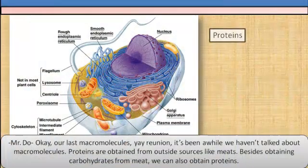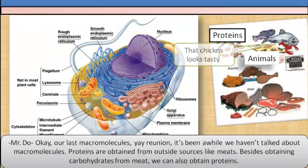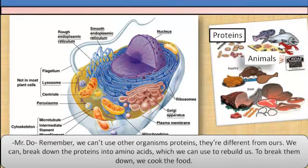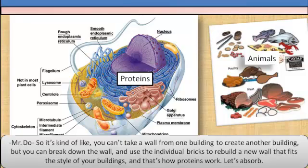Our last macromolecule: proteins are obtained from outside sources, like meats. Besides obtaining carbohydrates from meats, we can also obtain proteins. We can't use other organisms' proteins — they're different from ours. We can break down the proteins into amino acids, which we can use to rebuild ourselves. To break them down, we cook the food. It's kind of like: you can't take a wall from one building to create another building, but you can break down the wall and use the individual bricks to rebuild a new wall that fits the style of your building. And that's how proteins work.